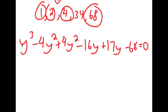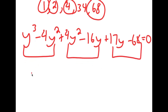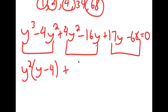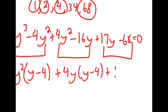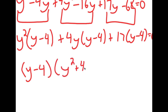Factoring by grouping in three pairs: from y³ − 4y², I factor out y² to get y²(y − 4). From 4y² − 16y, I factor out 4y to get 4y(y − 4). From 17y − 68, I factor out 17 to get 17(y − 4). So factoring out (y − 4), I get (y − 4)(y² + 4y + 17) equals 0.